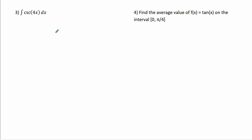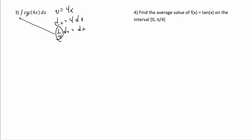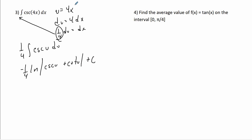For the integral of cosecant of 4x, I'll make u equal to 4x, so du equals 4 dx, meaning dx equals du over 4. I'll bring the 1/4 out front, so it's 1/4 times the integral of cosecant u du. Using our special identity, that's negative 1/4 times the natural log of the absolute value of csc u plus cotangent u plus c. Substituting back, it's negative 1/4 times ln|csc(4x) + cot(4x)| plus c. Again, I don't expect you to memorize it.